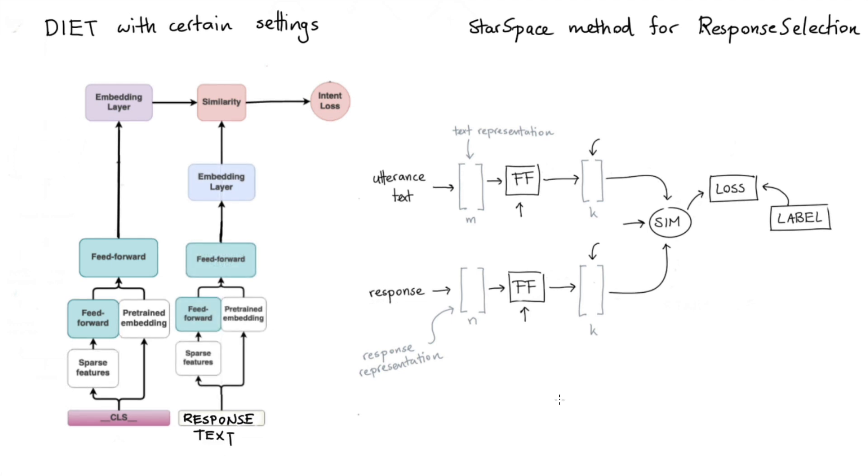If you now look at what we have here, because we have text going in both here as well as here, we can share the same featurizers quite easily. And this is going to give us more context than if we were just to one hot encode these response texts.